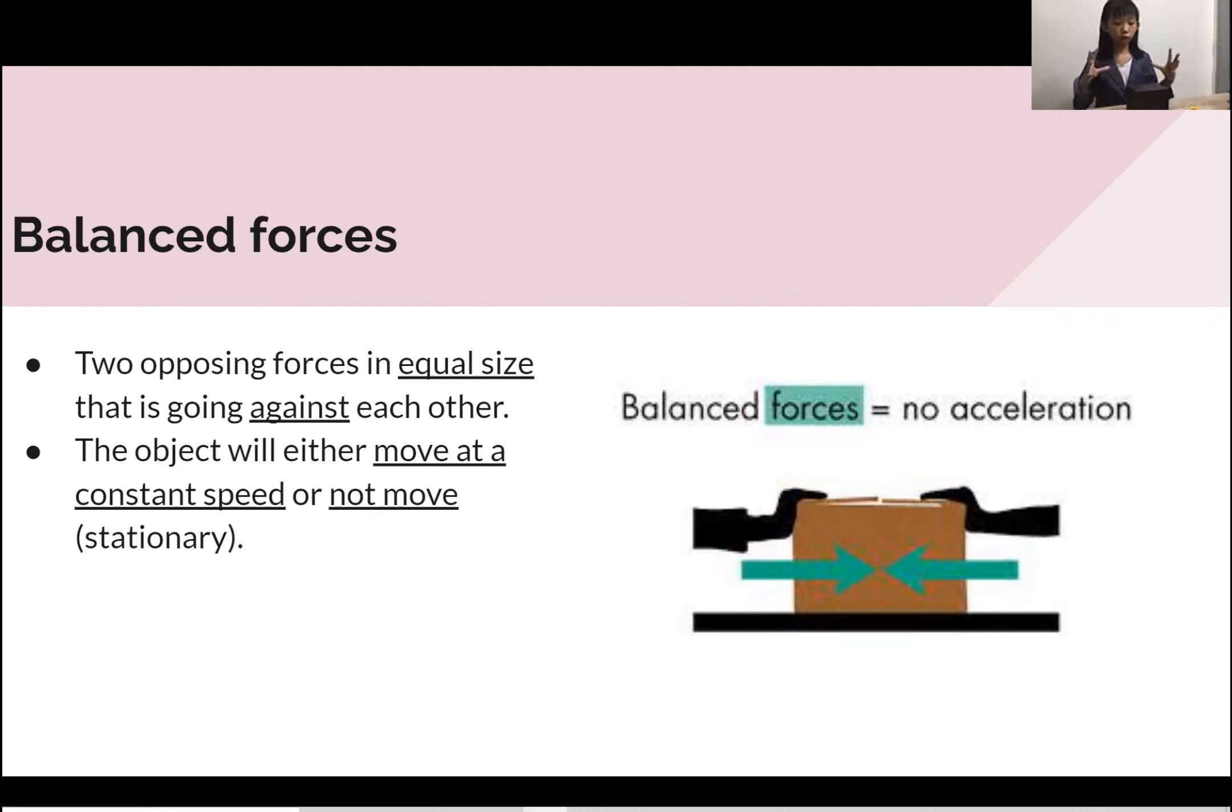For example, this is zero newtons and it's measured by newtons. So this is zero newtons and this is zero newtons, which will end up stationary. They can't push each other, it cannot move.